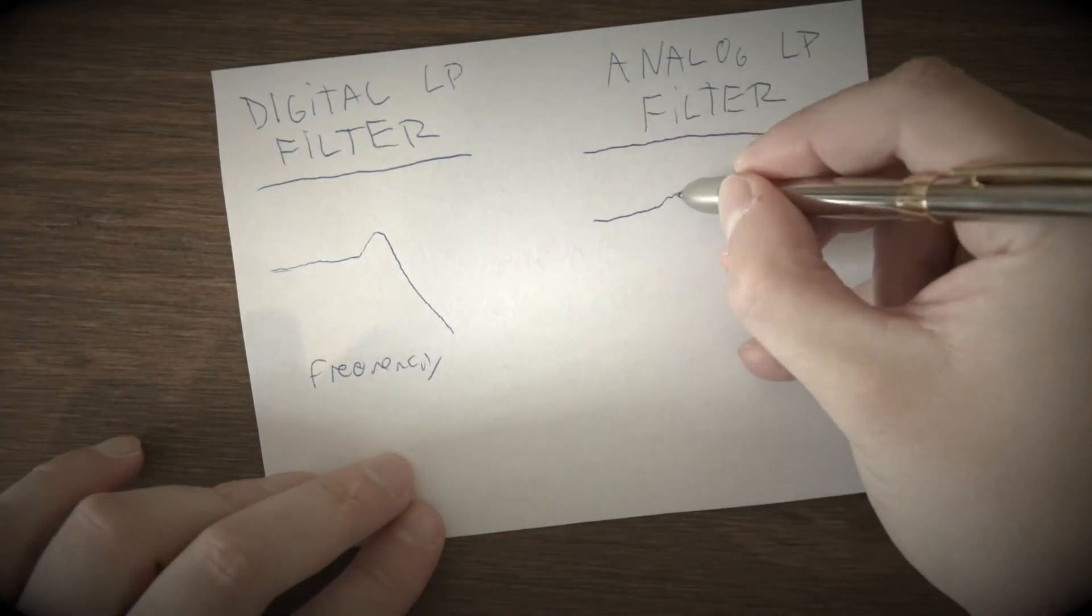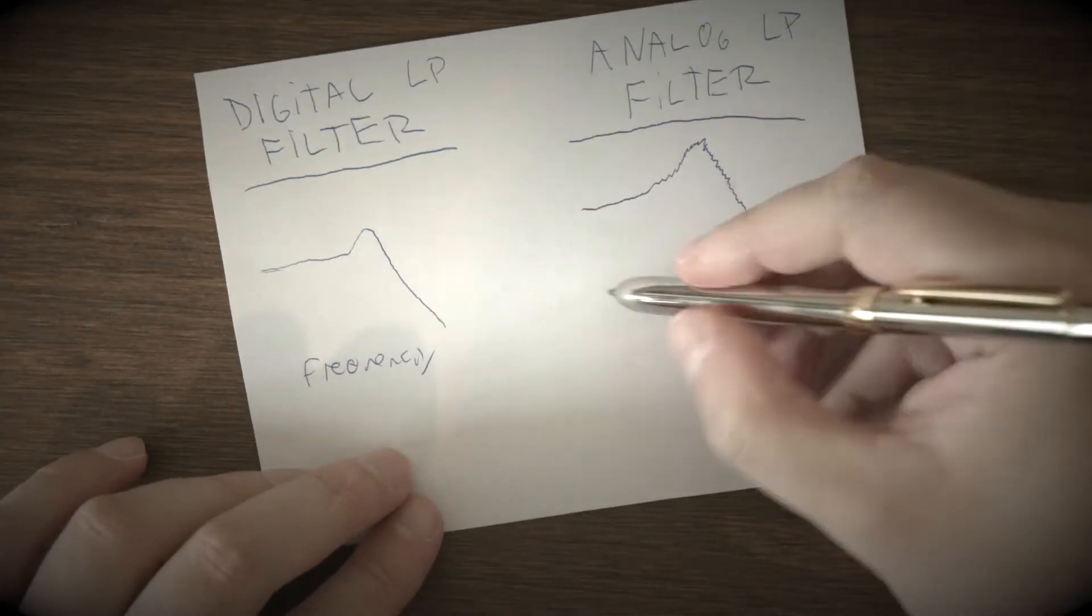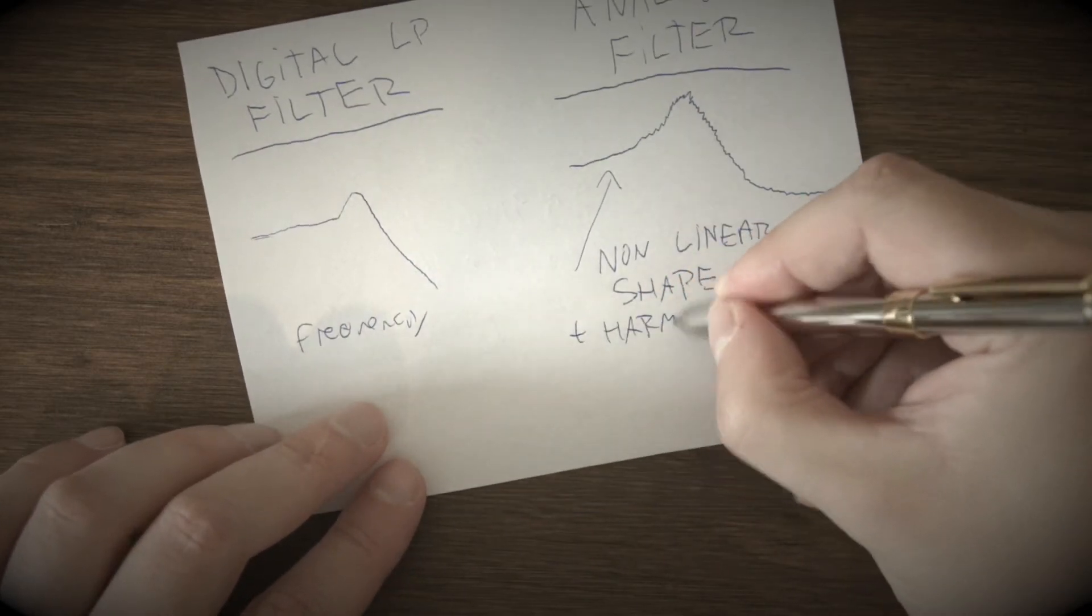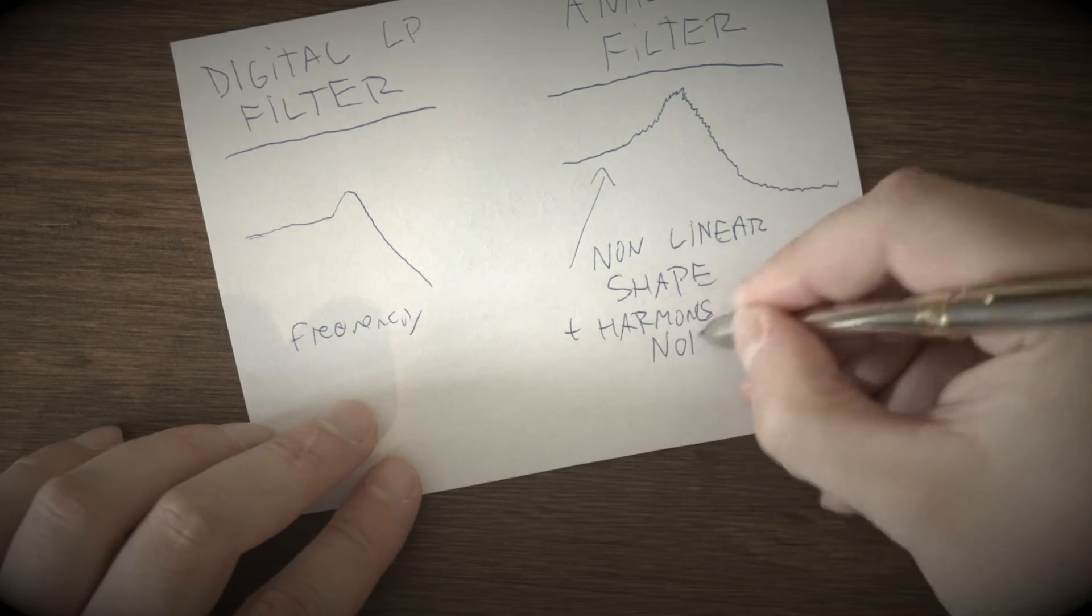While digital filter is precise, stable, and numb sounding, analog filter is non-linear, produces higher harmonics, saturation, and again little bit of noise.